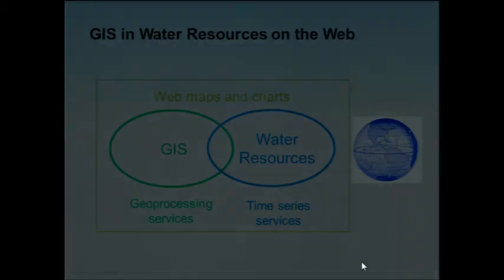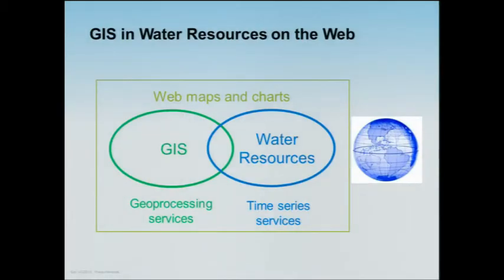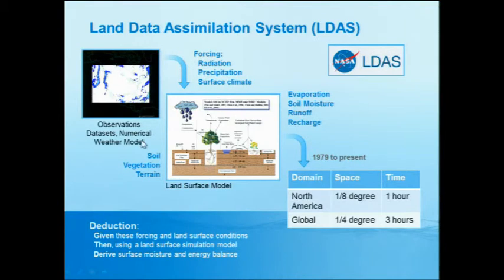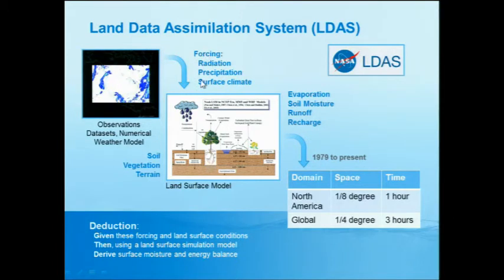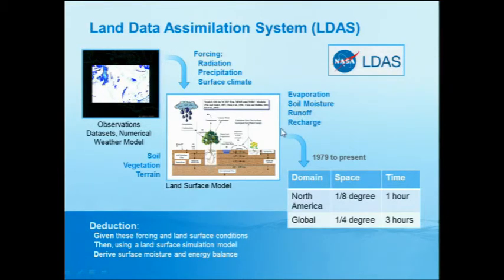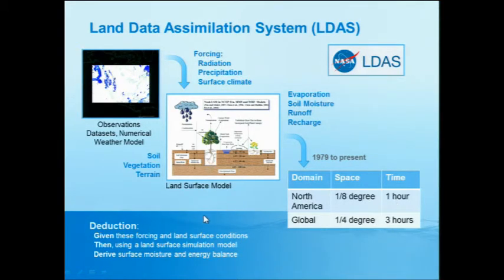We want to understand how web maps and charts work where we have geoprocessing services from GIS and time series services from water resources. The climate information — observations, numerical weather modeling — produces radiation, precipitation, temperature, humidity, and wind speed. That goes into a land surface model with soil, terrain, and vegetation parameters, running continuously to produce evaporation, soil moisture, runoff, and recharge from 1979 to the present. For North America, the data spacing is one-eighth of a degree at one-hour time steps; globally it's one-quarter of a degree at three-hour time steps.